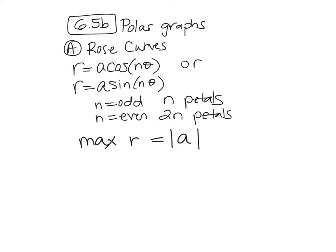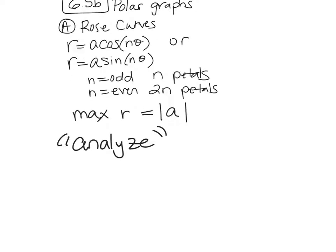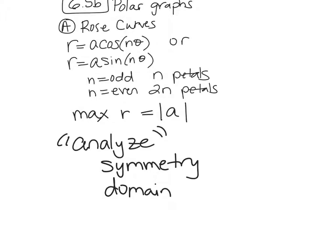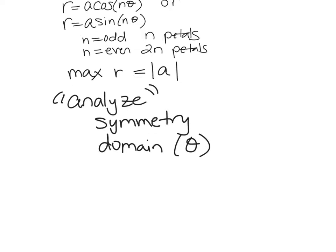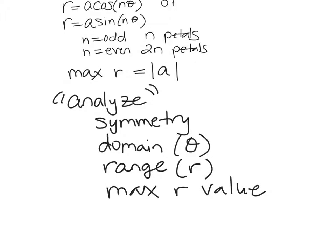Now, when they ask you to analyze — they're going to ask you to graph these graphs and then analyze them. You're going to tell us what the symmetry is. They don't ask 'what's the symmetry?' specifically — they say 'analyze this graph.' This is what they're going to want: symmetry, domain (which is what theta is), the range (which is R), and the maximum R value. We'll do one and I'll walk you through how to analyze the whole thing.